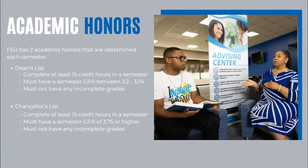FSU has two academic honors that are determined each semester: the Dean's List and the Chancellor's List. To make the Dean's List, students must complete at least 15 credit hours in a semester, must have a semester GPA between 3.2 and 3.74, and must not have any incomplete grades.